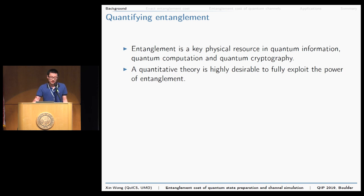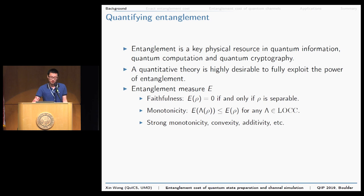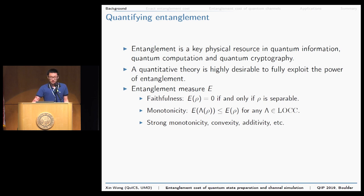Motivated by the fact that entanglement is a key resource in quantum information processing, a quantitative theory is highly desirable to fully explore its power. People introduced the concept of entanglement measures. To be a feasible entanglement measure, it must satisfy at least two conditions. The first is faithfulness: the measure should equal zero if the state is separable. The second is monotonicity: after implementing a free operation like LOCC, the entanglement should not increase. This is motivated by the fact that LOCC cannot create entanglement. There are also other conditions like convexity and additivity.